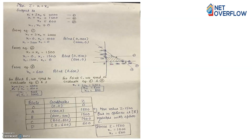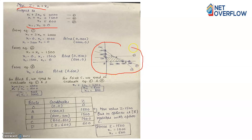Let's go to the solution. We need to maximize z subject to these constraints. The question hasn't mentioned which method to use, so I am going to use the graphical method. The graphical method is easy to implement since there are only two variables, x1 and x2.